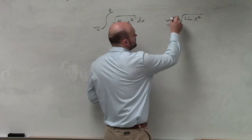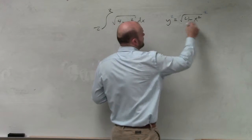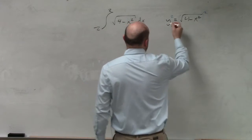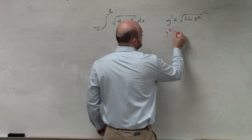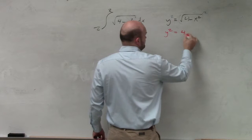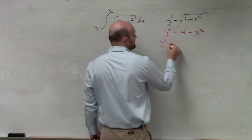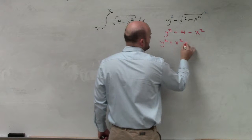So if we were to square both sides, we'd have y squared equals 4 minus x squared. You can get them onto the same side. We have y squared plus x squared equals 4.